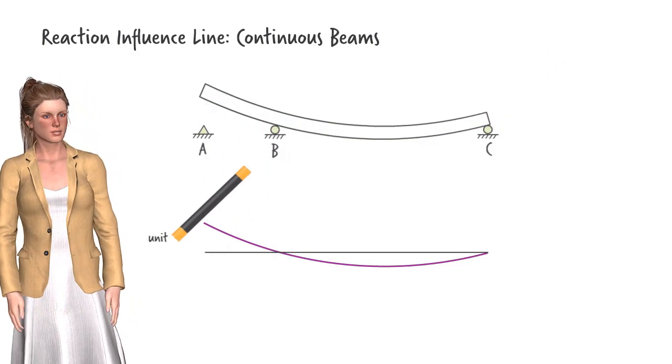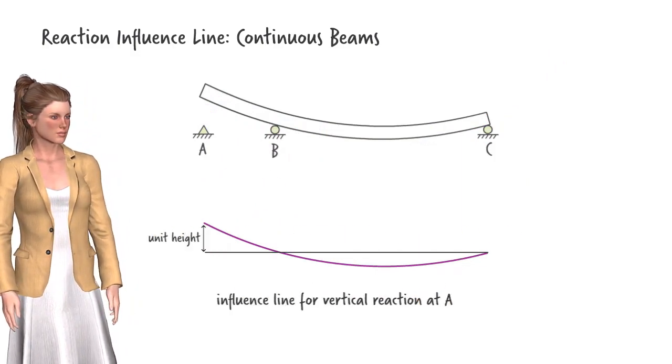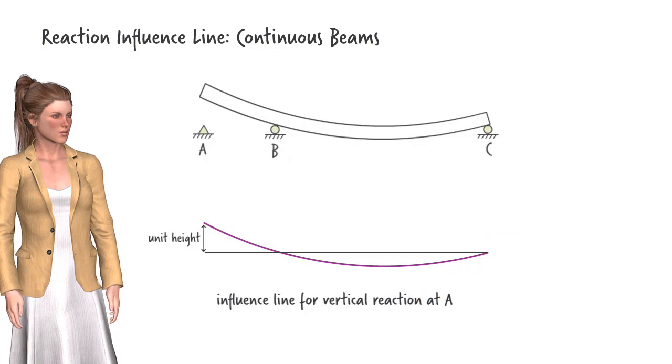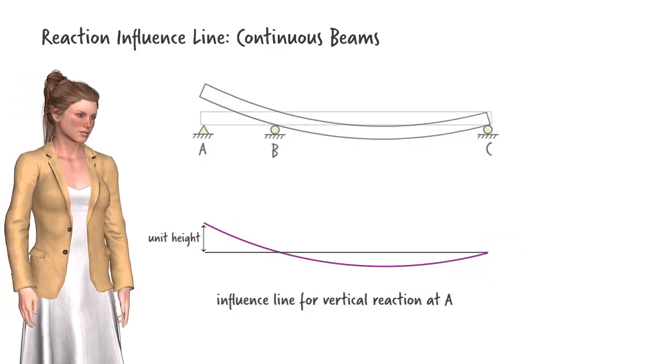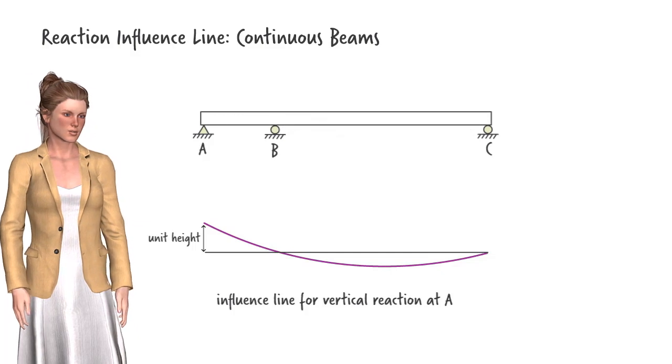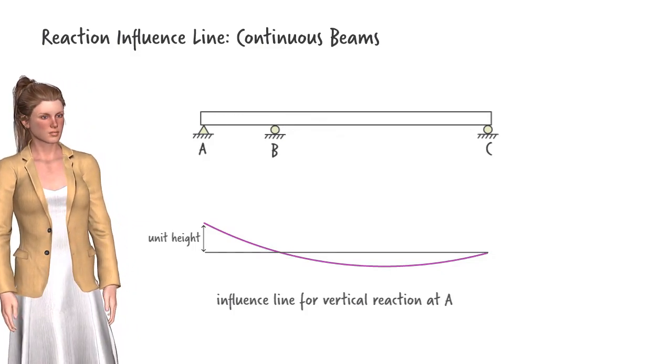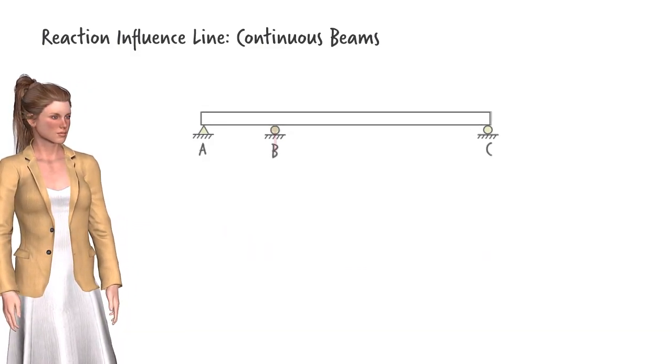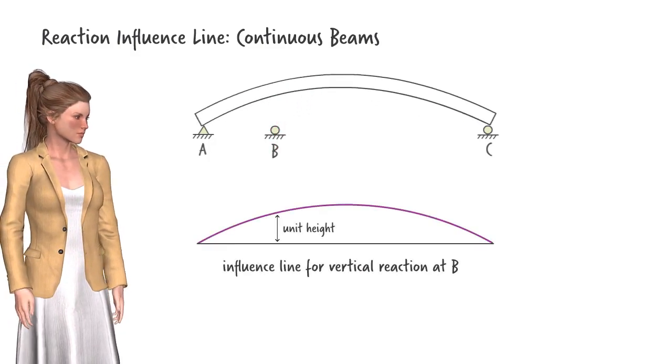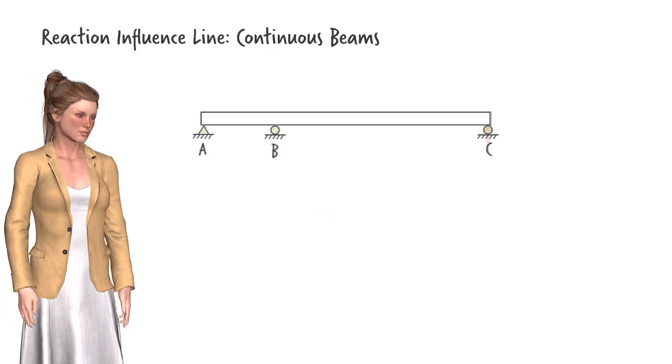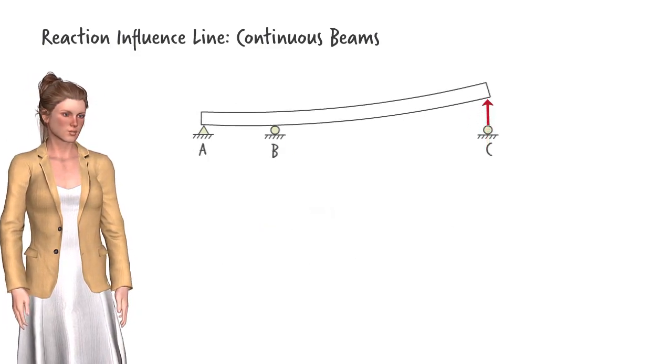This is the influence line for the vertical reaction at A. Unlike the case of determinate beams, here the resulting deformation is nonlinear. The influence lines for reactions at B and C can be constructed in a similar manner. Here is the reaction influence line for B, and here is the influence line for the reaction at C.